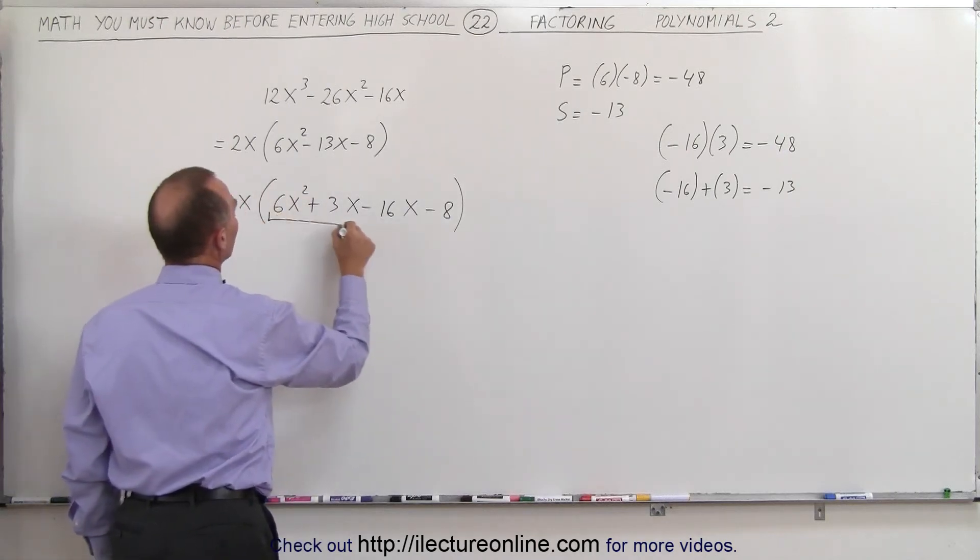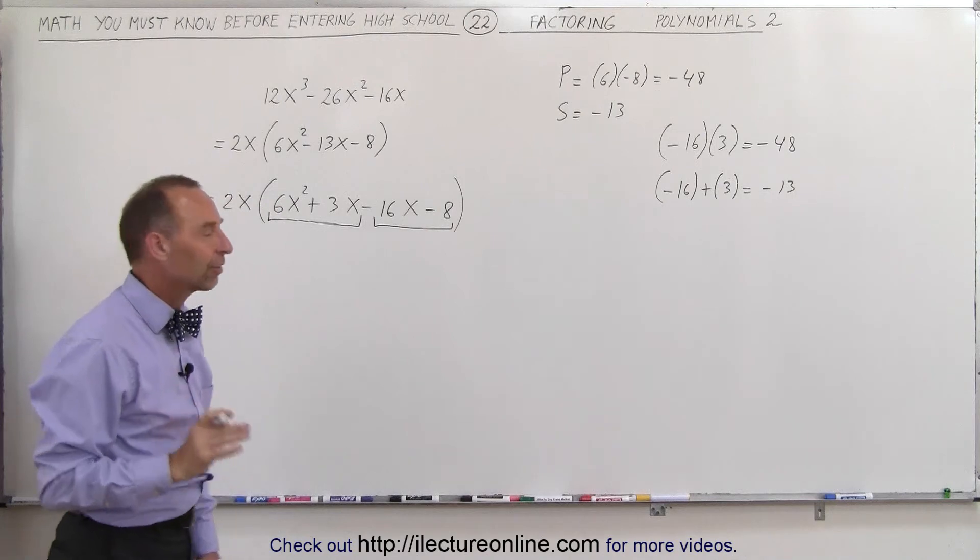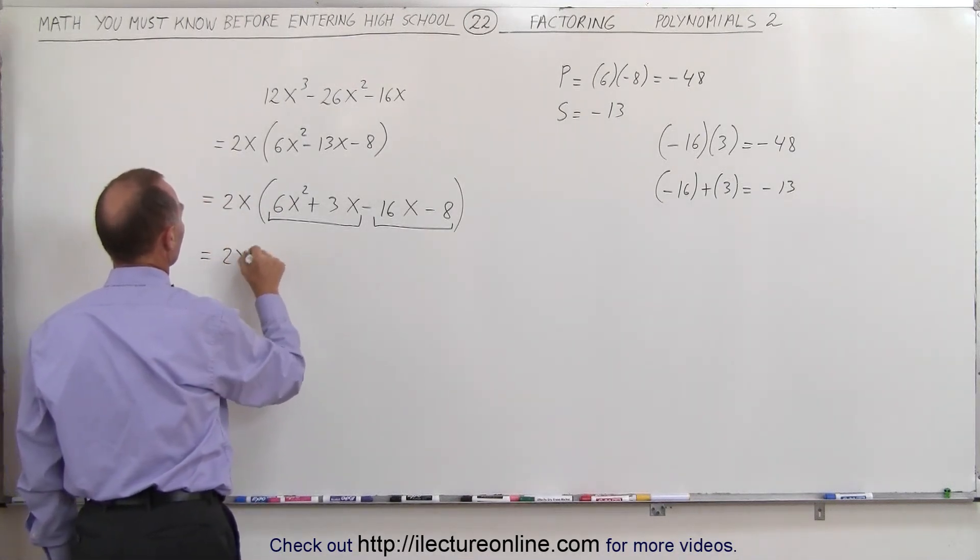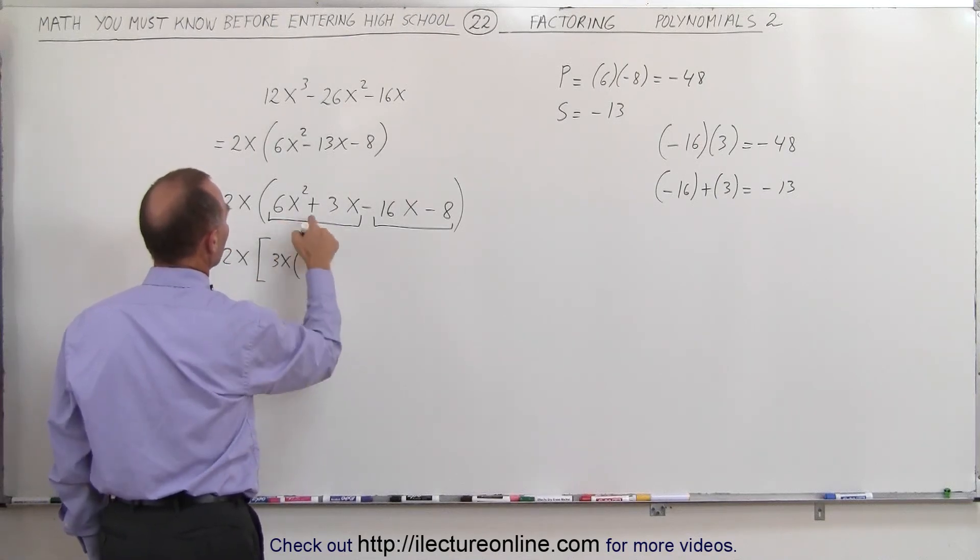Now I'm going to group these in groups of two. And in each group of two, I can factor out something that's common. In the first group, notice what's common is a 3x. When I factor out a 3x,